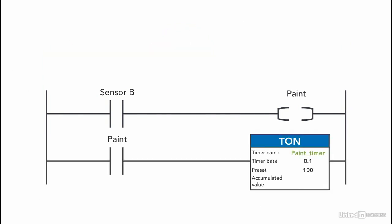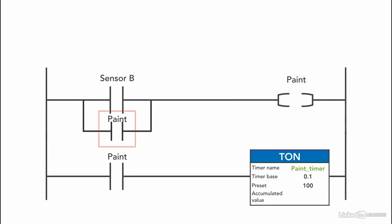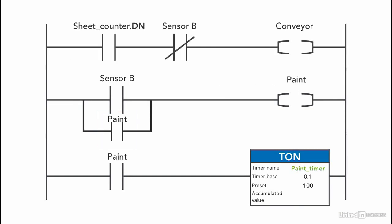The paint is applied for 10 seconds, so we need to add a timer on delay to keep track of the time. If we select the timer base as 0.1, then the preset value is 100. In order to keep the paint on, we're going to use a hold-in or seal-in instruction to keep the paint on during that time. This is how the program looks so far.